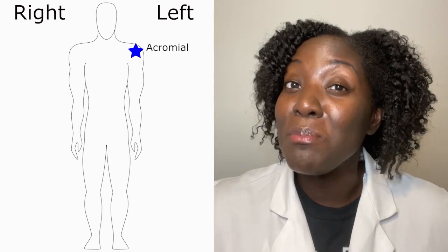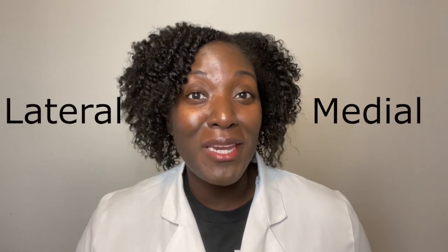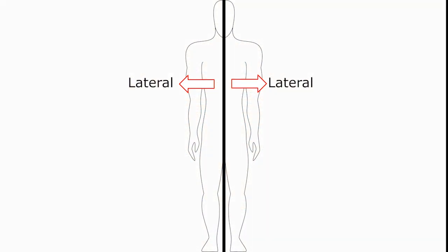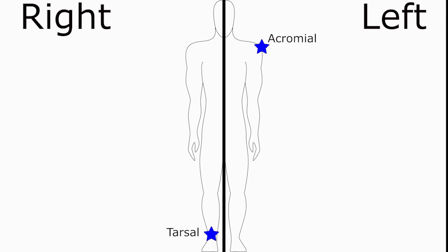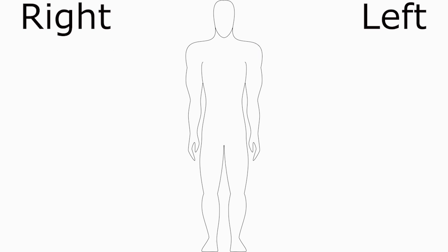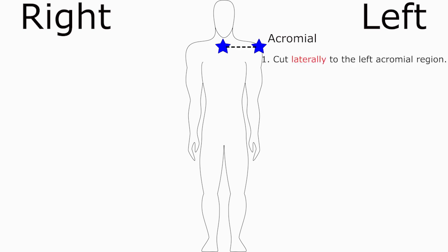Now I need to get to the middle of the body. There are two terms you need to know: lateral and medial. Lateral means side and medial means middle. Since I'm trying to make an incision to the middle of the body, I will cut medially to the midline. If I started at the midline and wanted to cut to the left acromial region, I will cut laterally because I'm going to the side.